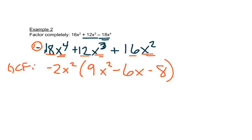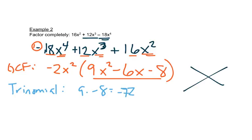So now we're looking at this part inside here. There's no more GCF there, that's good. It has three terms, so it's a trinomial again. So we take A times C, and we get negative 72. So remember, we're trying to multiply to get a negative 72, and add to get a negative six.